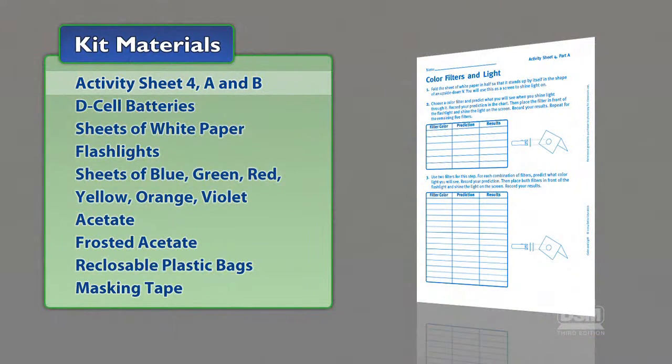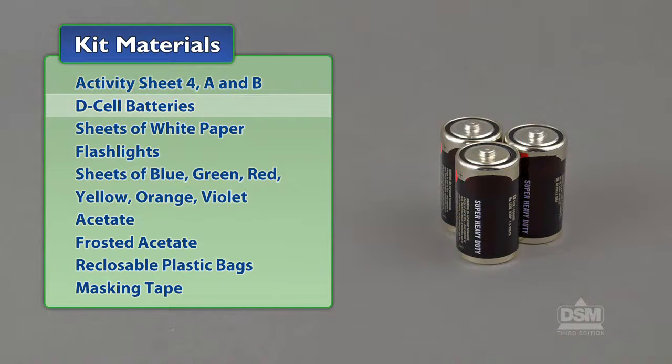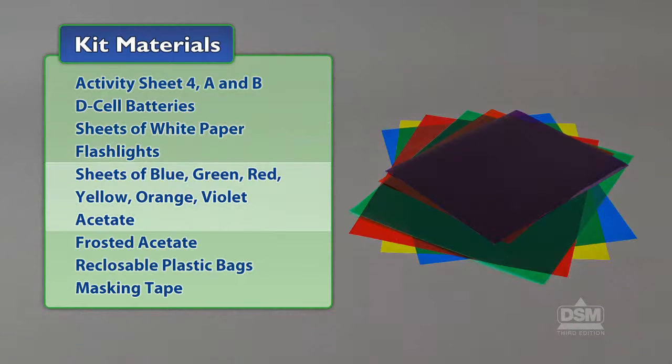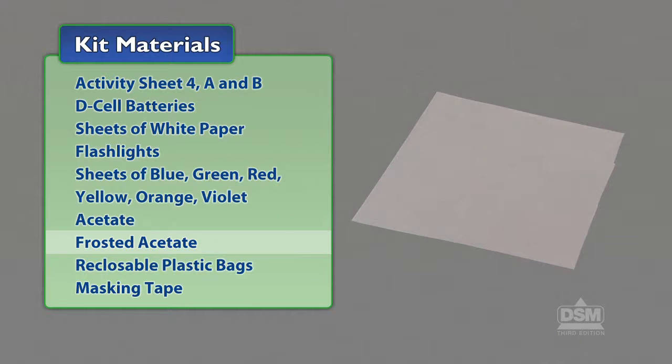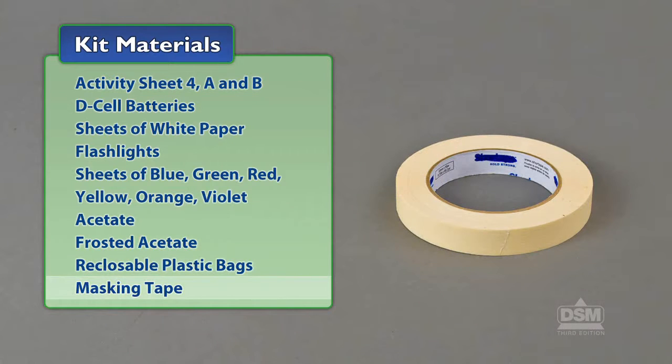You will need the following materials from the kit: Activity Sheet 4 Parts A and B, D-cell batteries, sheets of white paper, flashlights, sheets of blue, green, red, yellow, orange, and violet acetate, frosted acetate, reclosable plastic bags, and a roll of masking tape. You will also need to provide scissors.